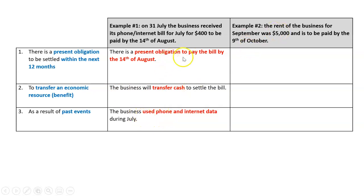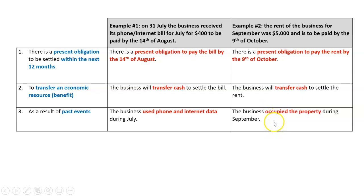What about if instead of the phone and internet, it was the rent? So the rent of the business for September was $5,000, but we don't have to pay it until the 9th of October. Well, at the end of September then, we have an obligation. What is that obligation? To pay the rent by the 9th of October. And to settle that obligation, we will transfer an economic resource or benefit, which again will be cash. What was the past event? Well, in that case, we occupy the property during September.